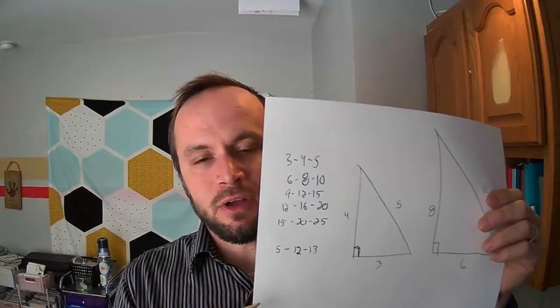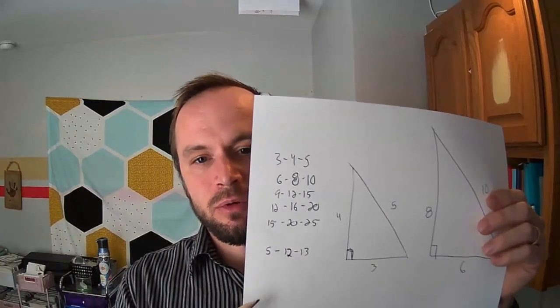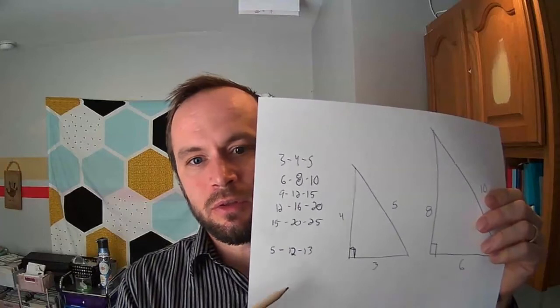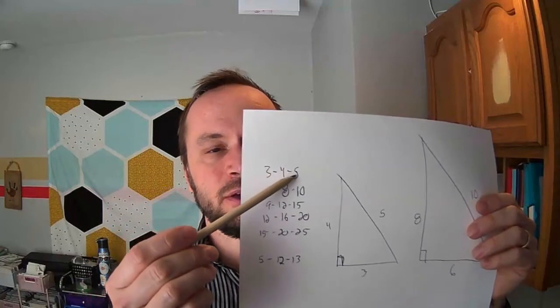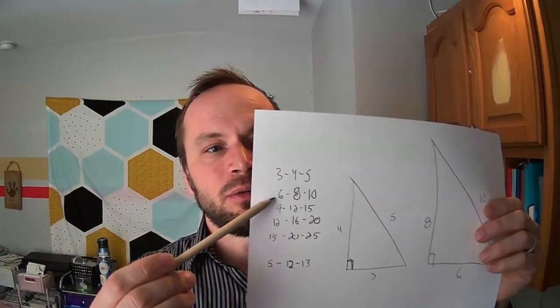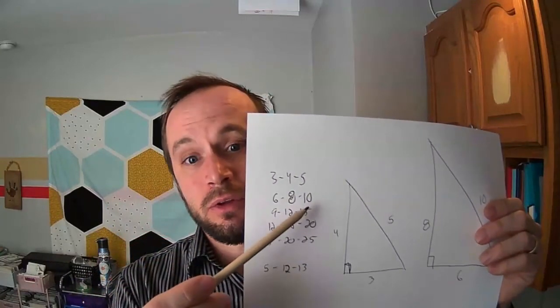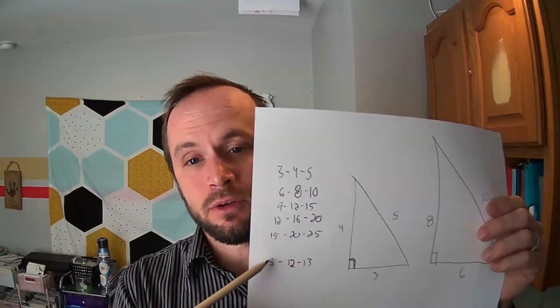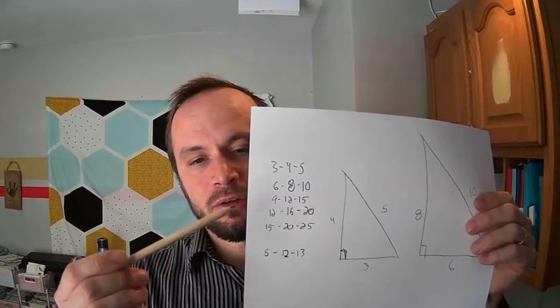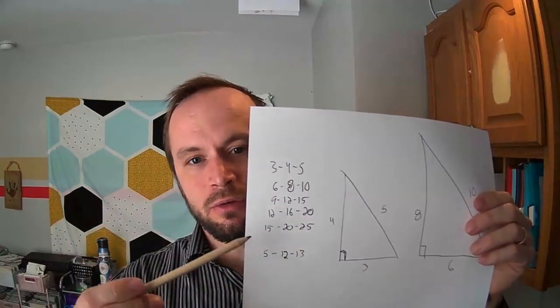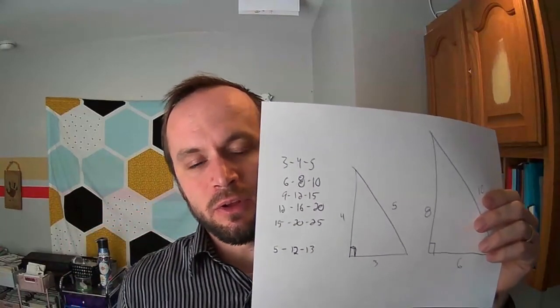If I plug this in, any one of these sides, into that Pythagorean theorem, a squared plus b squared, has to equal c squared, it'll be true for all of them. So if I do 3 squared plus 4 squared, it'll equal 5 squared. If I do 6 squared plus 8 squared, it'll equal 10 squared, and so on. So that's how I know that these will give me a square wall, or a 90 degree angle. Just using that Pythagorean theorem.